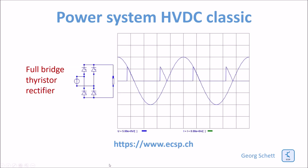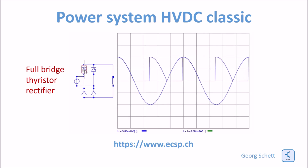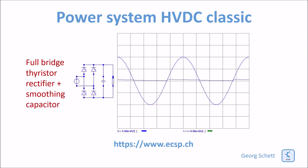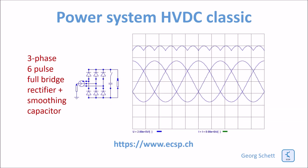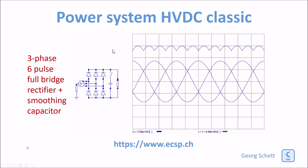So far we have been looking at diodes only, but to control the amplitude of the DC voltage we now use thyristors instead. Going from one phase to three phases, we move to a six-pulse full bridge rectifier. A smoothing capacitor can also be introduced, giving an already pretty smooth DC output.